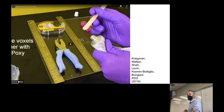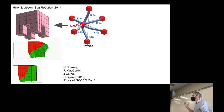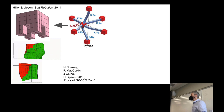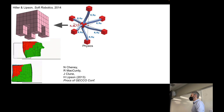Assuming we can cross the sim-to-real gap, what might we want to do? Well, we're going to proceed as before: we are not going to presuppose the body plan of a robot. We're going to allow the evolutionary algorithm, like Sims, to modify both the bodies and brains of our robots in our evolving population.